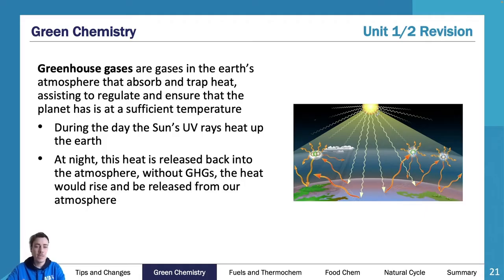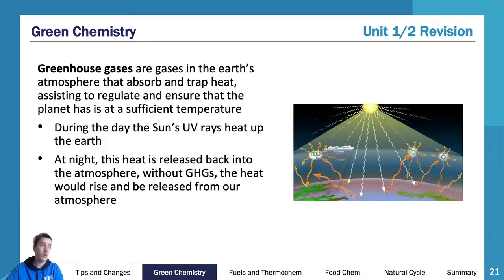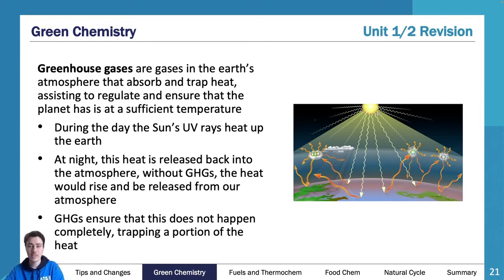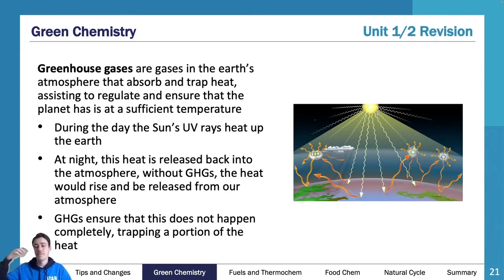Without greenhouse gases, the heat would essentially just rise and be released from our atmosphere, and every night we'd freeze — we would probably freeze to death, that's how cold it would get. Greenhouse gases ensure this doesn't happen. They do allow some heat out — the idea is that if greenhouse gases are in their correct proportions, we trap the correct amount of heat and everything works perfectly well. However, obviously that doesn't always happen and our greenhouse gases are not in perfect balance.